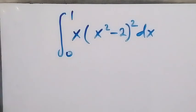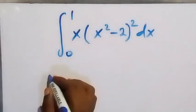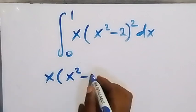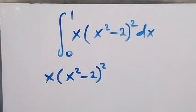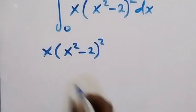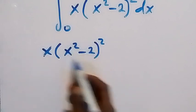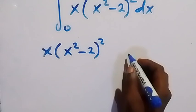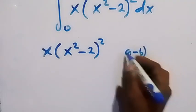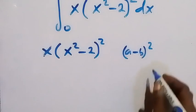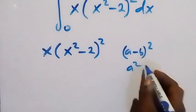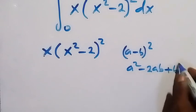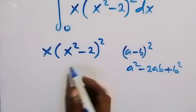We have x times (x² minus 2) squared, so we can simplify this algebraic expression first. When we square this, remember the formula: (a minus b)² equals a squared minus 2ab plus b squared.